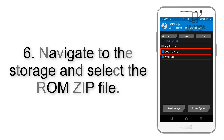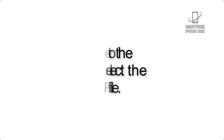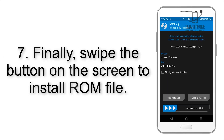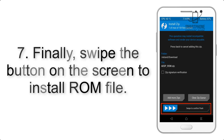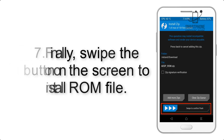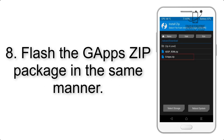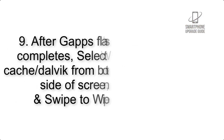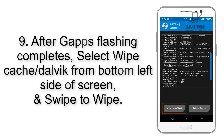Step 6: navigate to the storage and select the ROM zip file. Step 7: swipe the button on the screen to install the ROM file. Step 8: flash the Gapps zip package in the same manner.